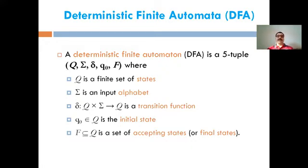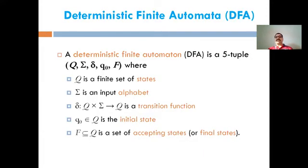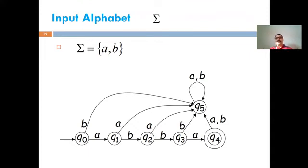Capital F represents the final states — it may be a set of final states, meaning more than one state can be a final state. This is the basic mathematical representation of Deterministic Finite Automata using the five-tuple. Now we will explain each element using a diagram.